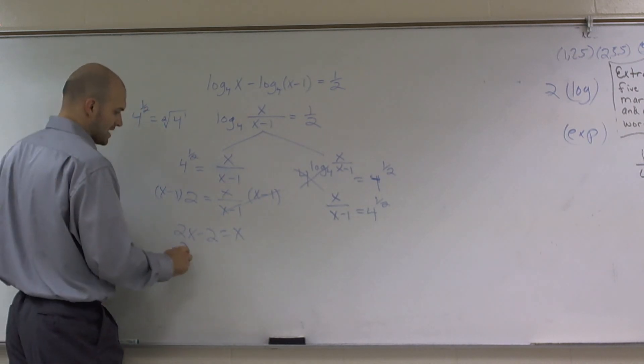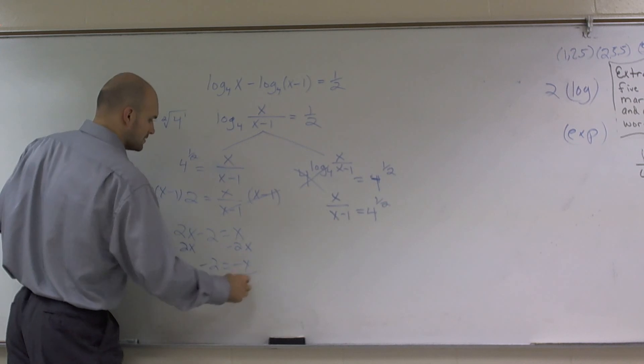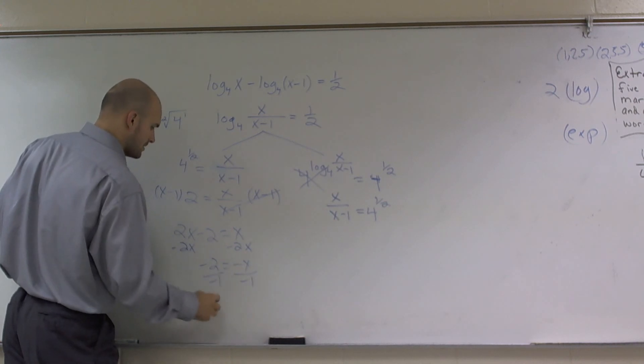Then I subtract the 2x. And I get negative 2 equals a negative x. Divide by negative 1. And I get x equals a positive 2.